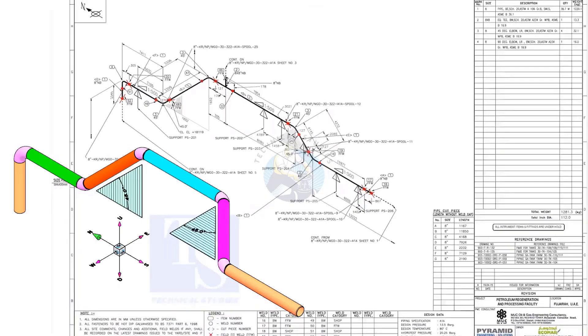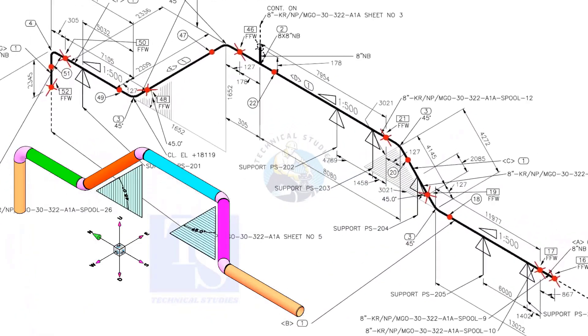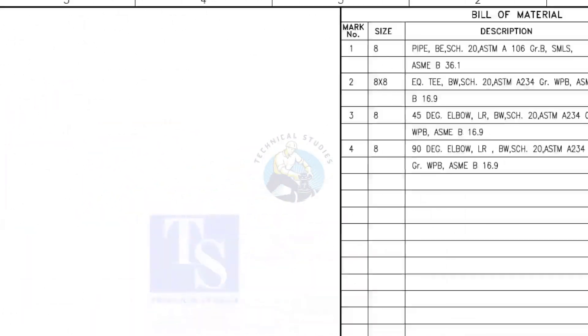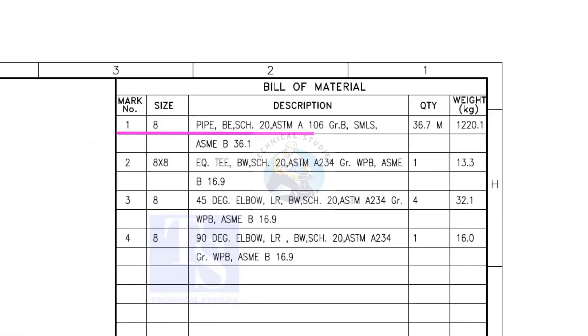Let us have some basic idea of the drawing. Item number 1 is 8-inch pipe, BE is bevel end, schedule 20, SMLS stands for seamless.